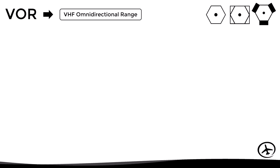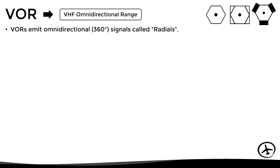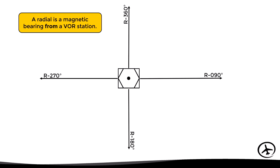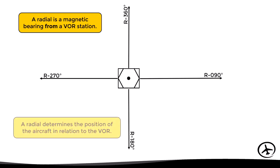Similar to the NDB, a VOR can also be used as a navigation reference for VFR flights. VOR stands for Very High Frequency Omnidirectional Range. It is a NAVAID that emits omnidirectional signals known as radials. In order to navigate with a VOR, the aircraft must be equipped with an HSI, an RMI, or a VOR dedicated instrument. Just like a QDR of an NDB, a radial is a magnetic bearing from a VOR station, and therefore it determines the position of the aircraft in relation to the NAVAID.